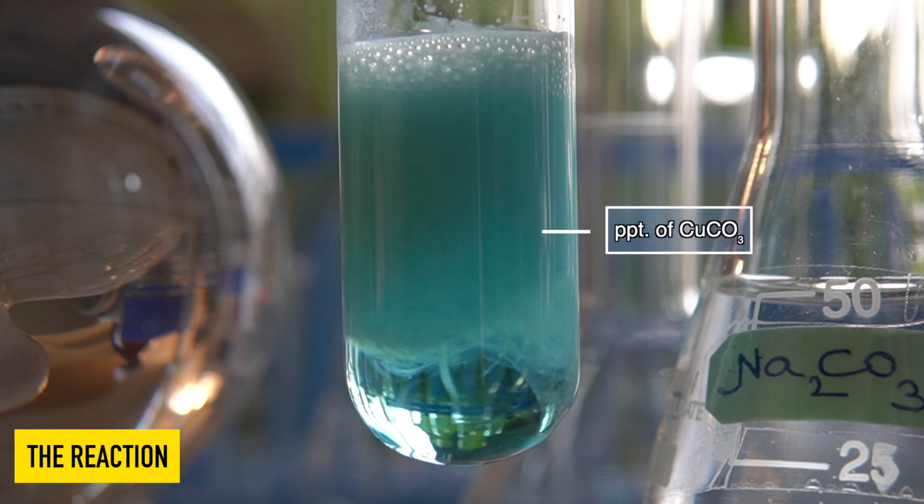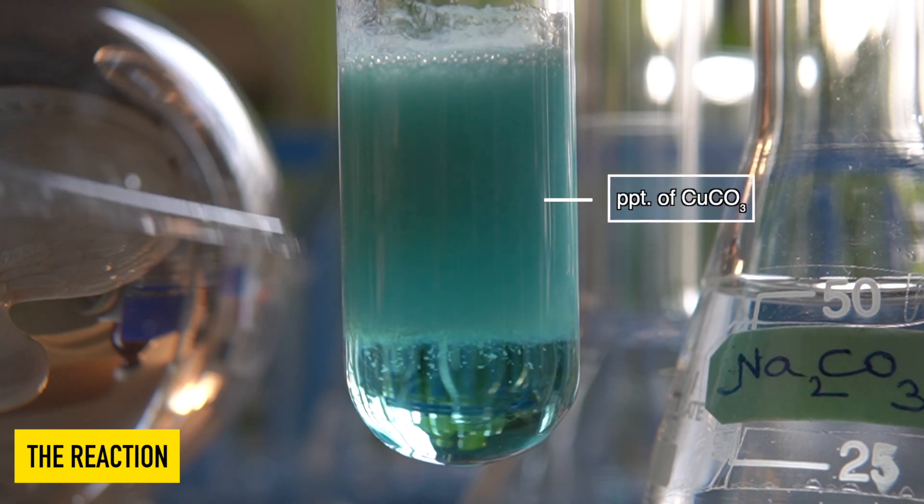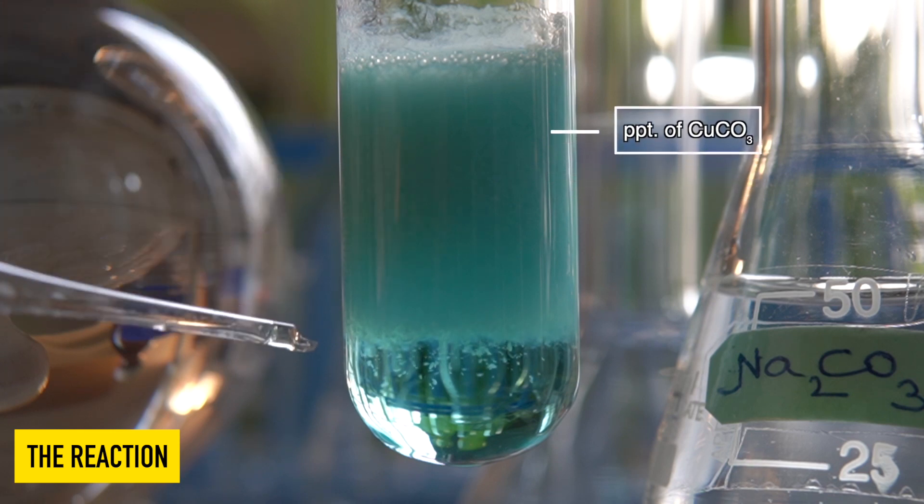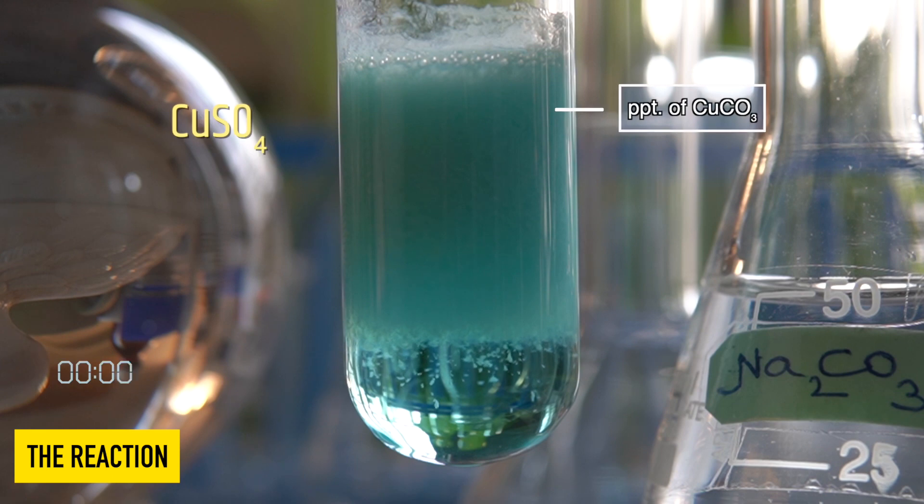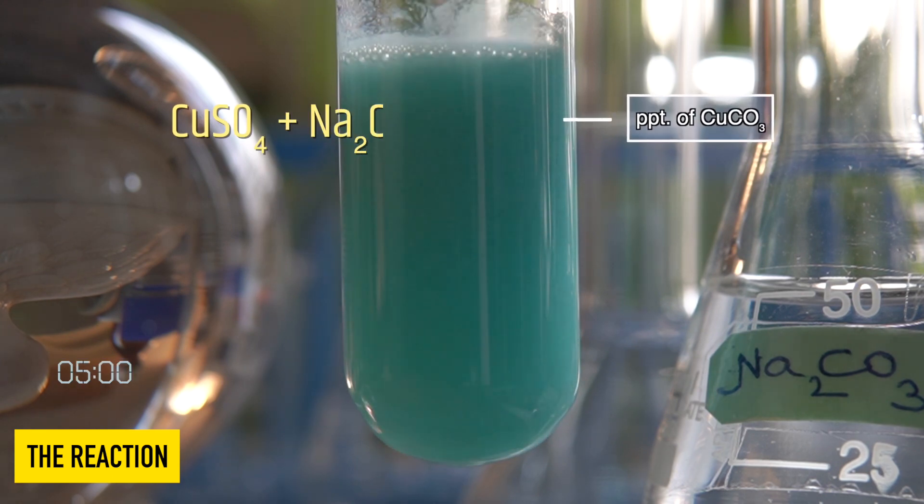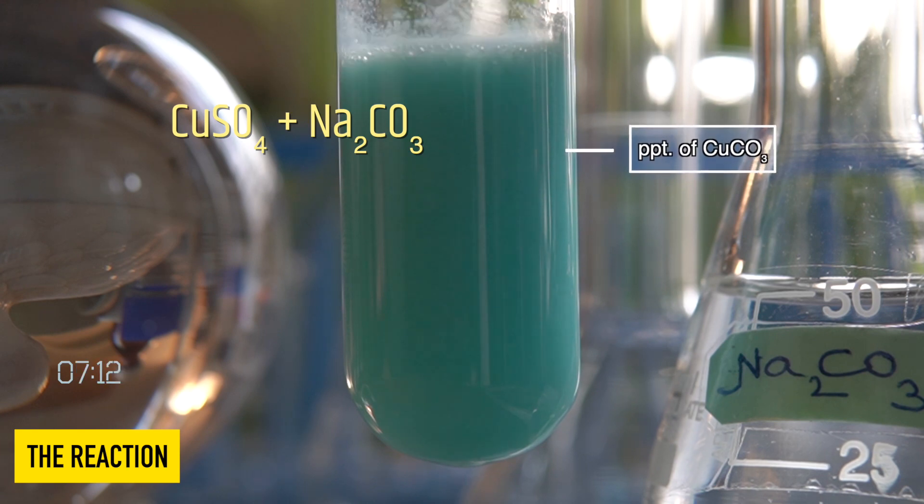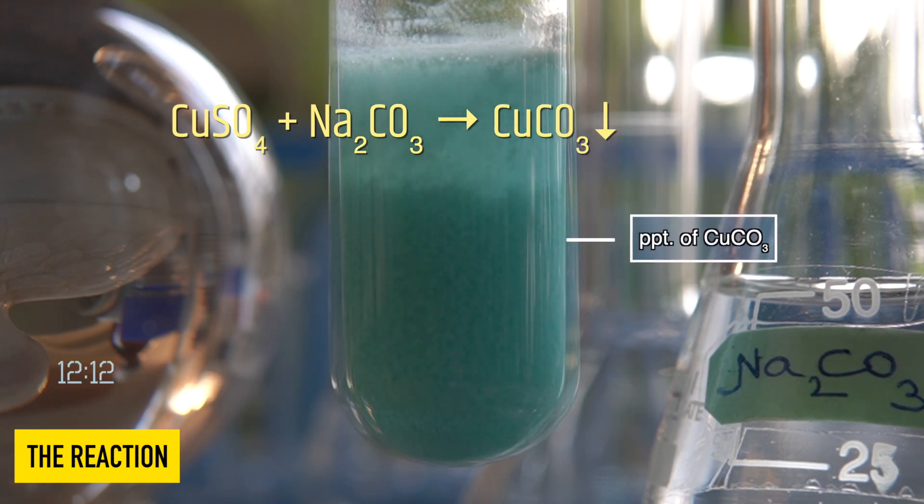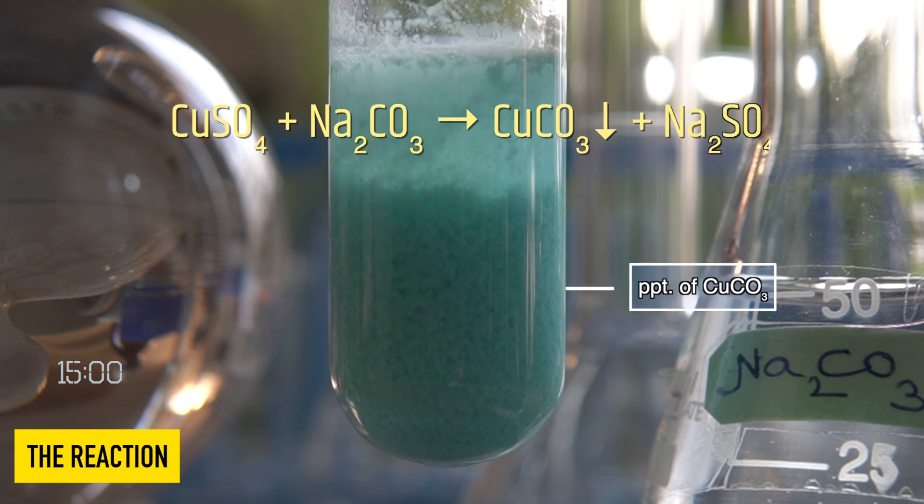The blue insoluble precipitate that has been formed inside the test tube is nothing but copper carbonate. In this reaction, copper sulfate reacts with aqueous solution of sodium carbonate to produce a blue precipitate of copper carbonate along with sodium sulfate.